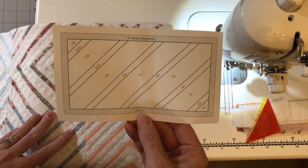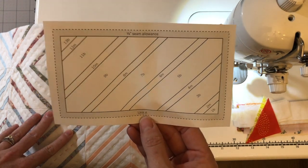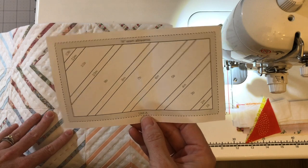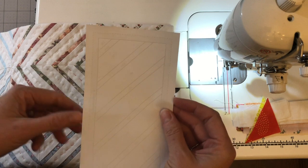This is for the unit A. Remember that the paper will be on the back side of your block so this will actually be on the correct side of your block.